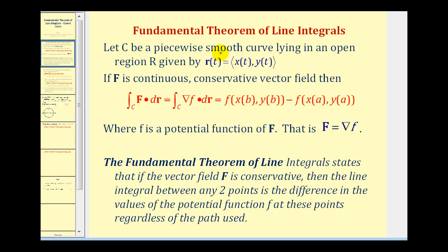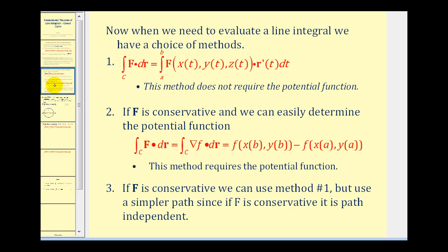Given a piecewise smooth curve, to apply this theorem we must first check that the vector field is conservative, then determine the potential function using gradient f. This theorem gives us choices when evaluating a line integral: we can always parameterize the curve and vector field in terms of t and integrate with respect to t, or if the vector field is conservative, we can use the fundamental theorem of line integrals with the potential function, or use a simpler path and parameterize in terms of t.